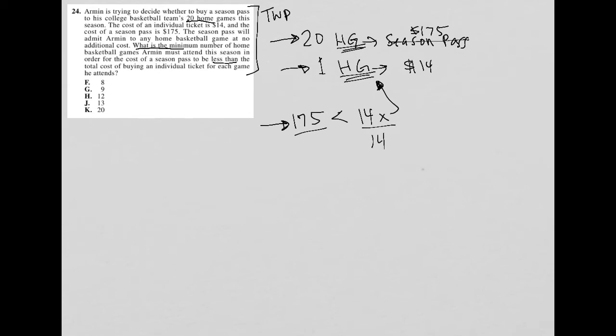I need to simplify this, so I divide by 14. I go to my calculator and divide 175 by 14. What I get is that 175 divided by 14 is 12.5. So 12.5 is less than X. Another way to think about that is that X is greater than 12.5.